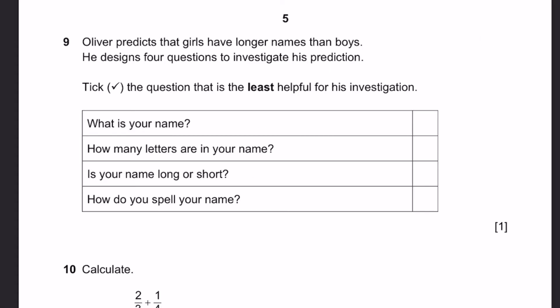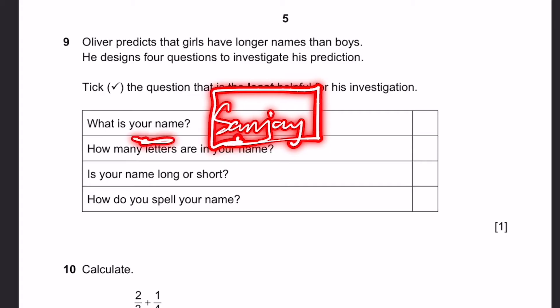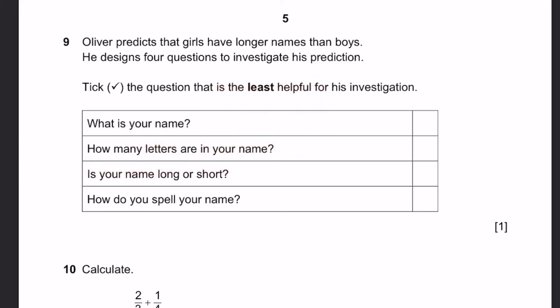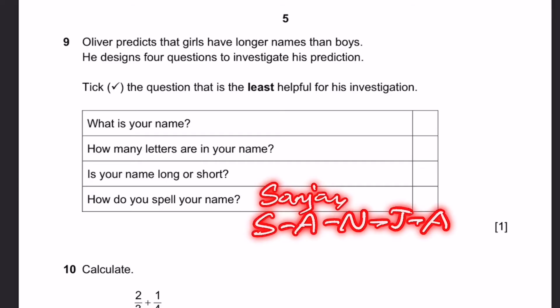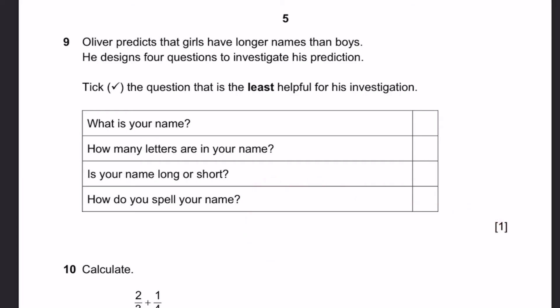Question 9. Oliver predicts that girls have longer names than boys. He designs 4 questions to investigate the prediction. Tick the question that is least helpful for his investigation. What is your name? If you ask someone what is your name, then let's say they reply Sanjay. That means that it has 6 letters. You can count this on your own. So this is partly helpful. If you ask how many letters are in your name, then if you ask this to Sanjay, he will say 6. So this is very useful since he will say that exact number and you don't really have to count it yourself. How do you spell your name? This question is also partly useful since Sanjay, for example, would reply S-A-N-J-A-Y, and therefore you would just count the number of letters he spelled. So you'll find out the length of the name, which is what he wants to know.